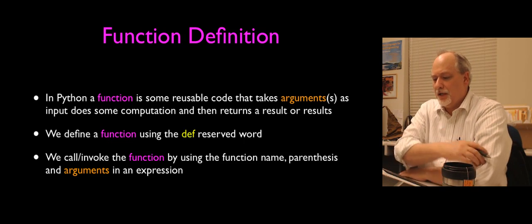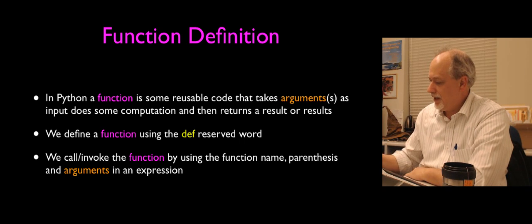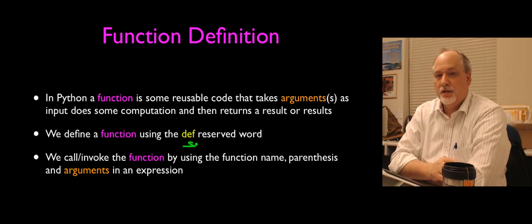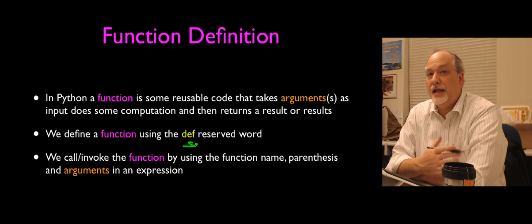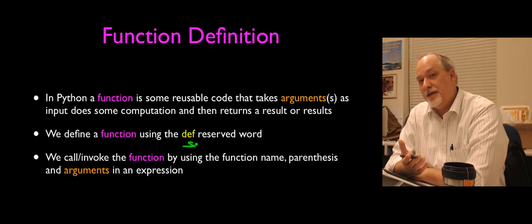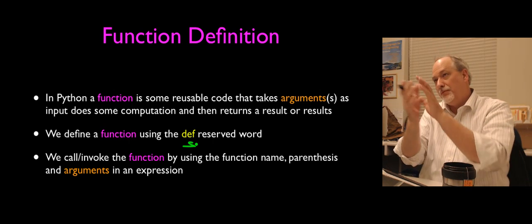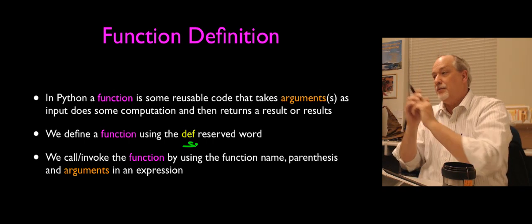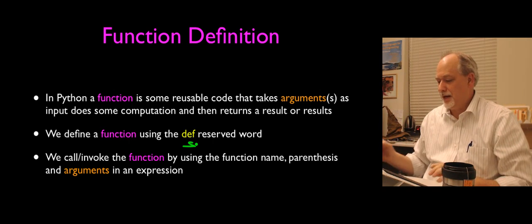When we're defining a function, we use the def keyword. The def keyword is a reserved word — it's one of the reserved words from chapter one — and it indicates to Python the beginning of a function. We define it, and then when we call it, it's called invoking. It's like we're building it and then invoking it. You can build it once and then invoke it many, many times.